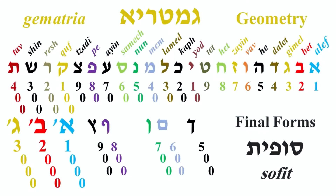First we're going to start off with our Hebrew Alephbet. Here you can see the Alephbet, Aleph through Tav. You can also see the Gematria values for the Hebrew Alephbet, as well as the Sofit — the final forms. Aleph being 1, Bet being 2, Gimel being 3, so on and so forth, all the way to Tav which is 400, and of course your Sofits. I've reiterated this quite a lot — you can look up my past videos to get more in-depth detail on the Hebrew Alephbet and how it's ordered.